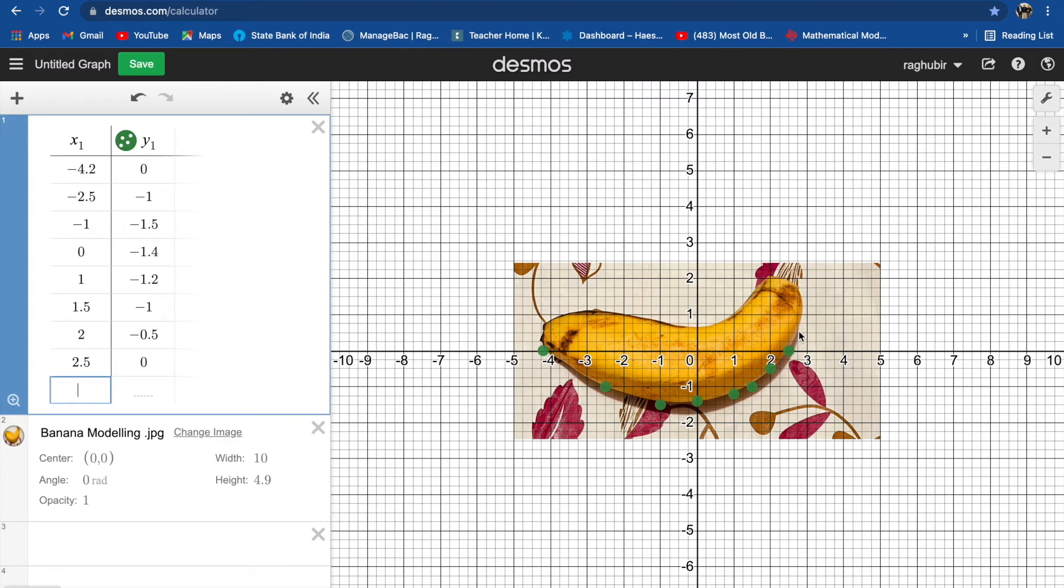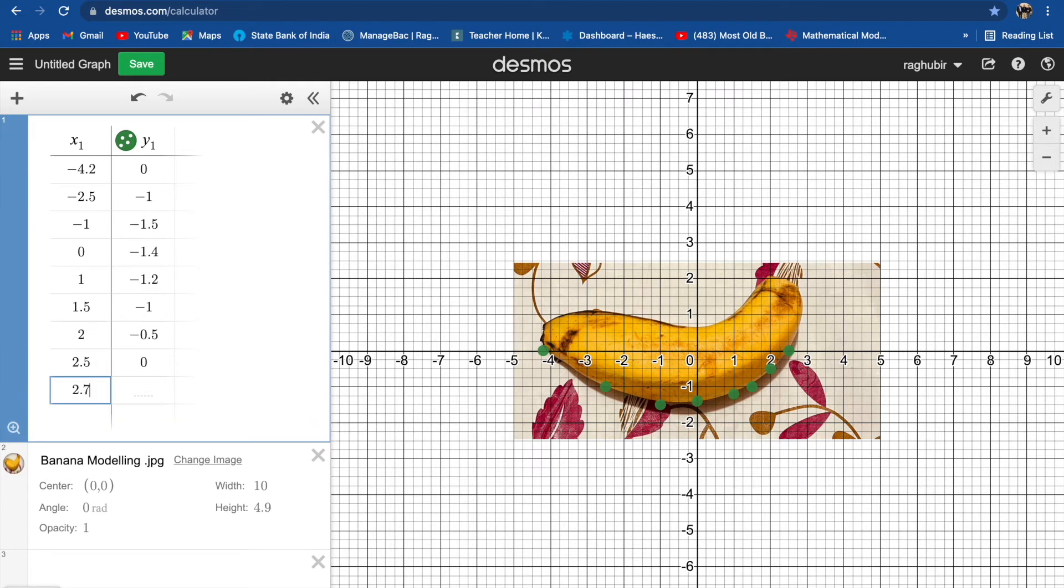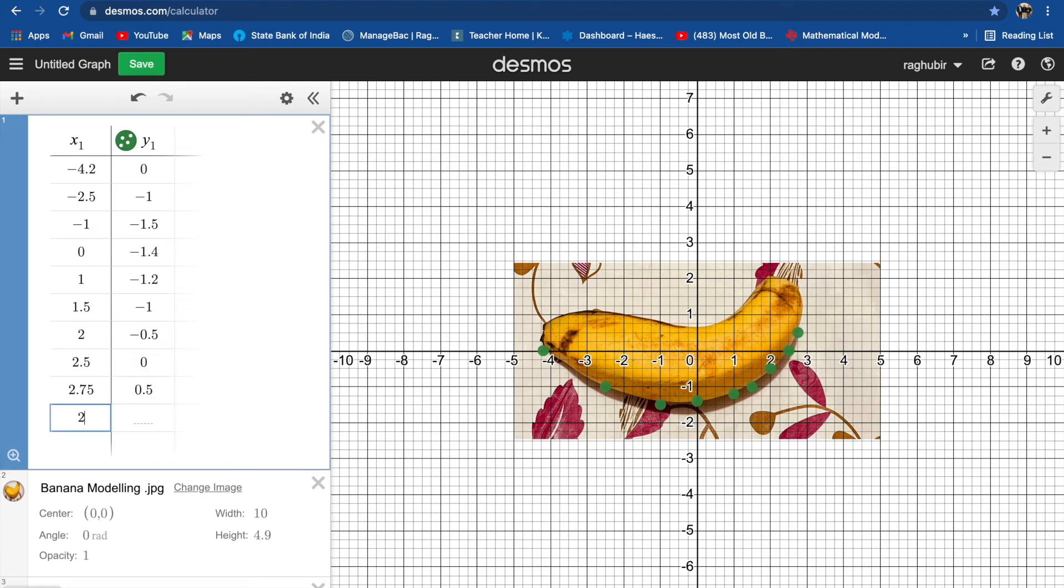Then X is 2.75 and Y is 0.5. Then we have X is 2.8 and Y is one.